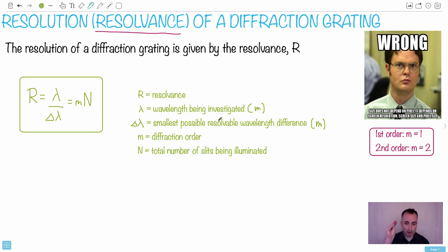Now we have this thing called diffraction order. Remember that could be M equals zero, one, two, three, and so on. You can have anything. And it's just a total number of slits being illuminated. N is just a number of slits being illuminated.